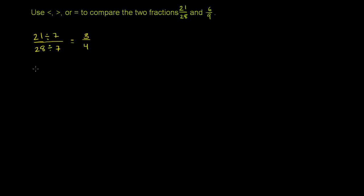Let's do the same thing for 6/9. 6 and 9 are both divisible by 3, so let's divide them both by 3 to simplify this fraction. 6 divided by 3 is 2, and 9 divided by 3 is 3. So 6/9 is the exact same fraction as 2/3. This is the more simplified version.